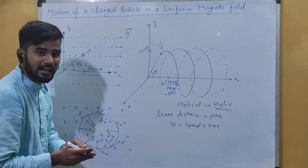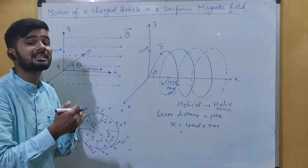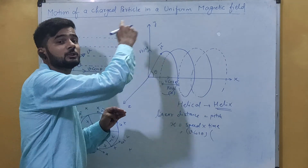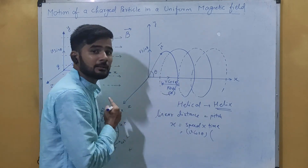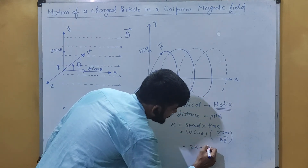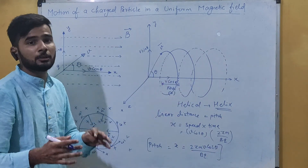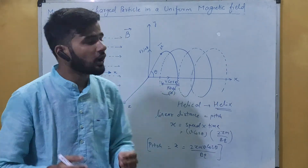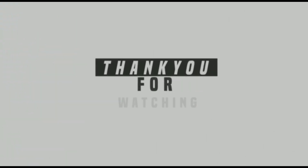The pitch x equals speed multiplied by time: x = v cos theta × T. The speed here is the velocity component along the magnetic field, which is v cos theta. The time is the time period for one circular revolution, which is 2·pi·m / (Bq). So the pitch is x = 2·pi·m·v·cos theta / (Bq). This is how a particle moves in a magnetic field under the combined effect of the two velocity components, tracing a helical path.